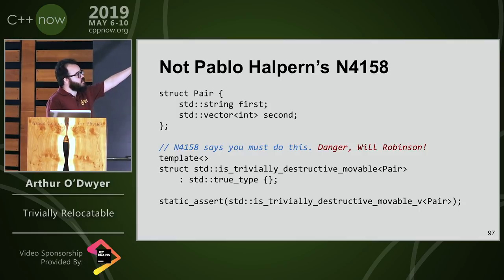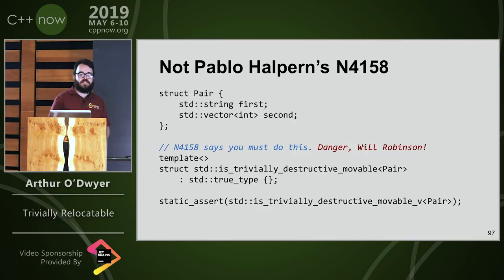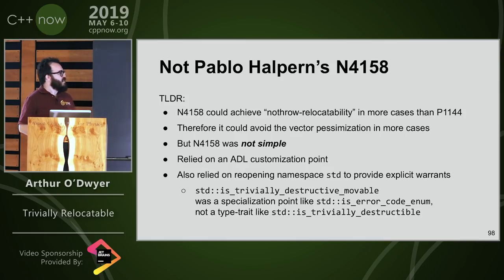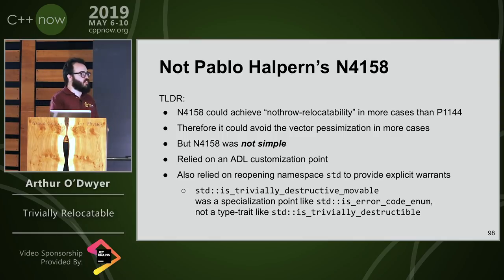How do I tell the compiler that it is trivially destructive moveable? If I have a Pair that follows the rule of zero and has a string and a vector, so it is trivially relocatable — in that case, the only way to communicate to the implementation that this is allowed is to do a partial specialization. Anytime I'm having to write a specialization, danger Will Robinson — that is very tedious and dangerous. If you're writing a warrant, you're doing it wrong. So TLDR: Pablo's proposal could achieve no-throw relocatability in more cases and could therefore avoid the vector pessimization in more cases, but it was not simple. It relied on an ADL customization point, it relied on reopening namespace std, and you did not really have a type trait to ask whether a type was trivially relocatable — instead, what you had is a specialization point like std::is_error_code_enum that you can specialize.